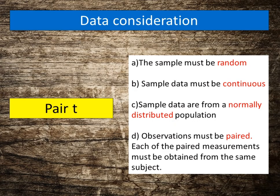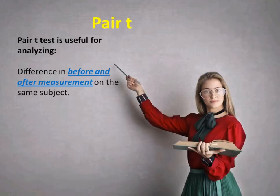On the other hand, for a paired T test, the sample must be random, continuous and sample data are from normally distributed population. Besides, observations must be paired. Each of the paired measurements must be obtained from the same subject. Paired T test is useful for analyzing differences in before and after measurement on the same subject.